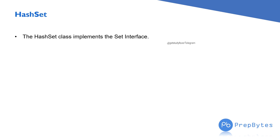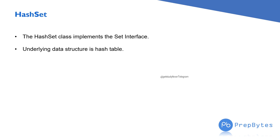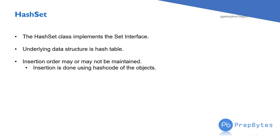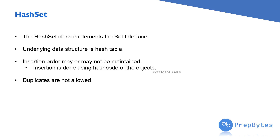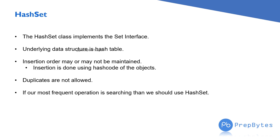The HashSet class implements the Set interface, so it has to implement every method in the Set interface. Since Set has no new methods, it implements all the methods of the Collection interface. The underlying data structure is a hash table. Insertion order may or may not be maintained — it is not guaranteed. Insertion is done using the hash code of the objects. Duplicates are not allowed. If our most frequent operation is searching, then we should use HashSet.